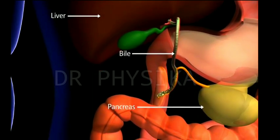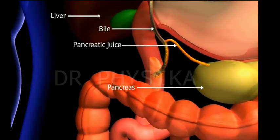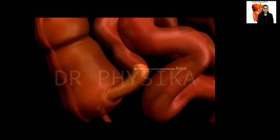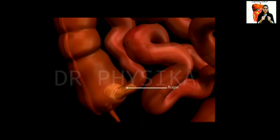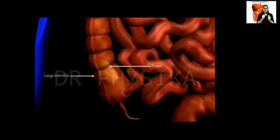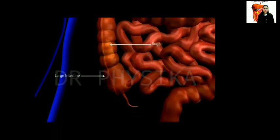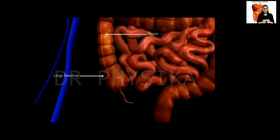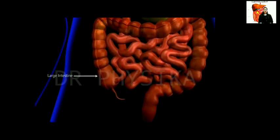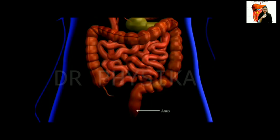The pancreas releases an enzyme-containing pancreatic juice into the small intestine. These enzymes help to digest carbohydrates, fats, and proteins. The unabsorbed food is sent to the large intestine as waste material. The large intestine also has villi on its walls. The large intestine is wider and shorter than the small intestine; it is about 1.5 meters in length. Its function is to absorb water and some salts from the undigested food material. Finally, it is expelled from the body through the anus.